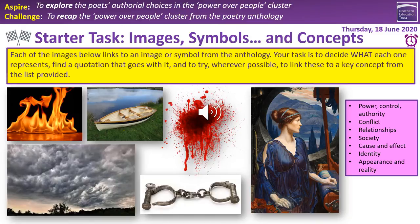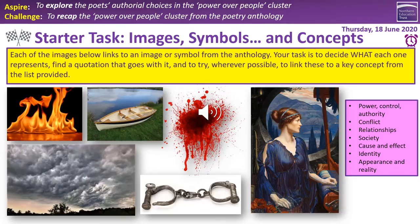For our starter task today, we're looking at images, symbols, and concepts. Concepts are those key themes that run throughout lots of the poems but are also linked to other texts in our GCC program. You'll find links here to Macbeth or Romeo and Juliet, DNA or An Inspector Calls, and Christmas Carol and Jekyll and Hyde, depending on which you study. The first step is to decide which poems these images or symbols link to — some will apply to one poem, some to several.